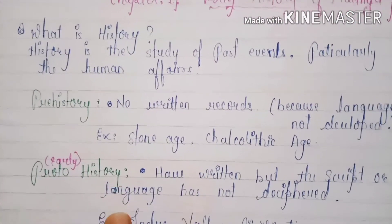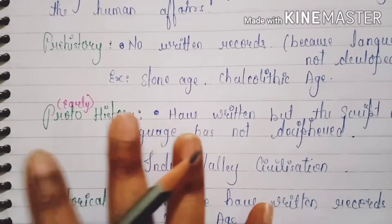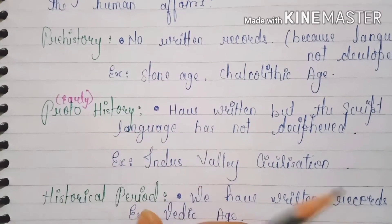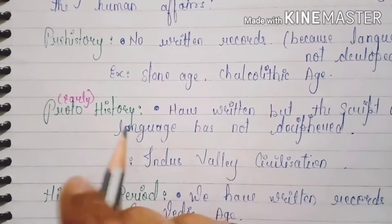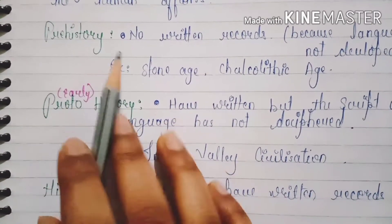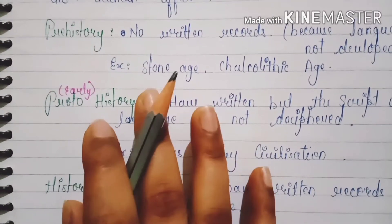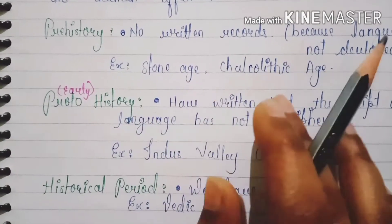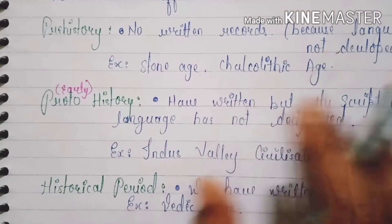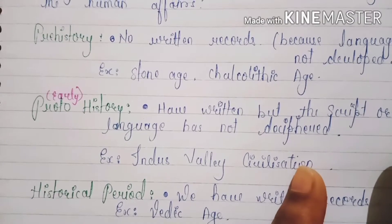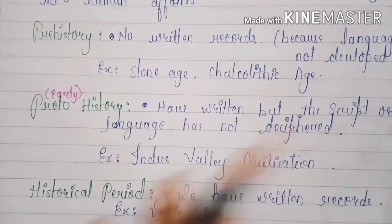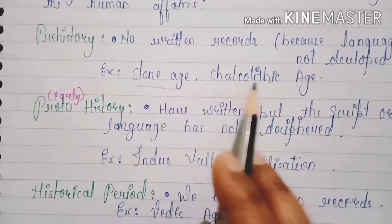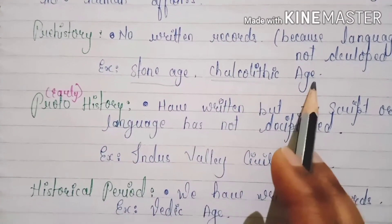History is divided into three ways: Pre-history, Proto-history, and Historical period. In Pre-history, there is no written record. At that time, the language was not developed. We can say it is the Stone Age, which is the earliest age.